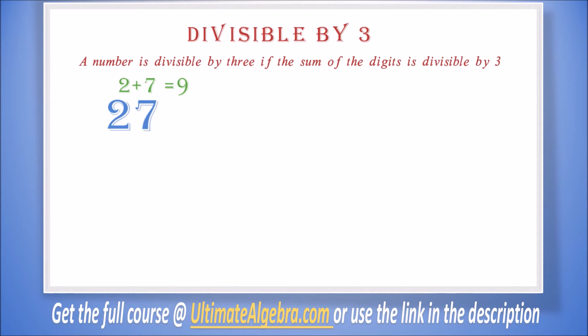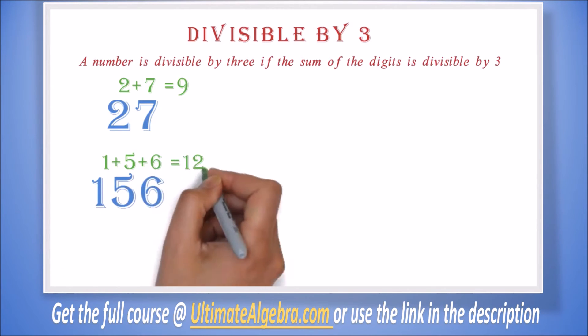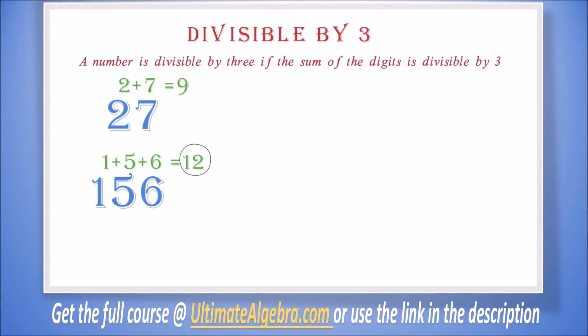Example 2: 156 is divisible by 3 because when you add 1 plus 5 plus 6 you will get 12. 12 can be divided by 3 with no remainder. Please note that this is not the answer, it only shows it is divisible. If you do the actual division your answer will be 52.